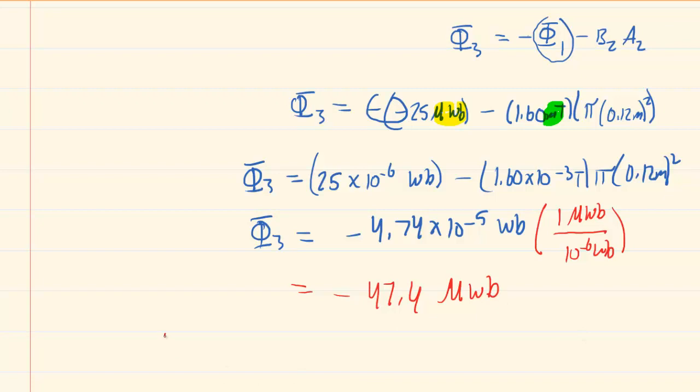So as far as the magnitude is concerned, for the magnitude, we just take the absolute value. So that would become positive 47.4 microwebers. So that would be the answer to the magnitude.